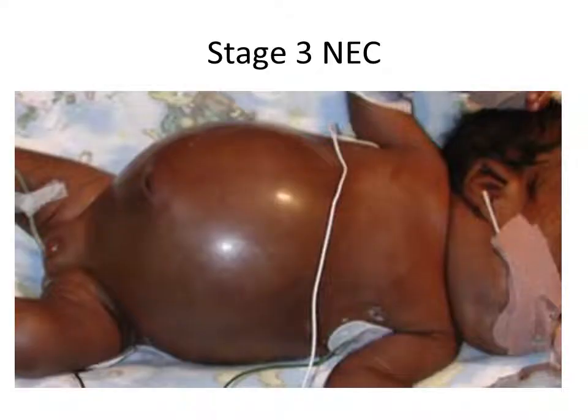This picture shows a child in stage 3 NEC: a tense, shiny abdomen with discoloration of the abdominal wall. The child requires urinary output monitoring and has a ventilator in place — a very sick child with NEC.